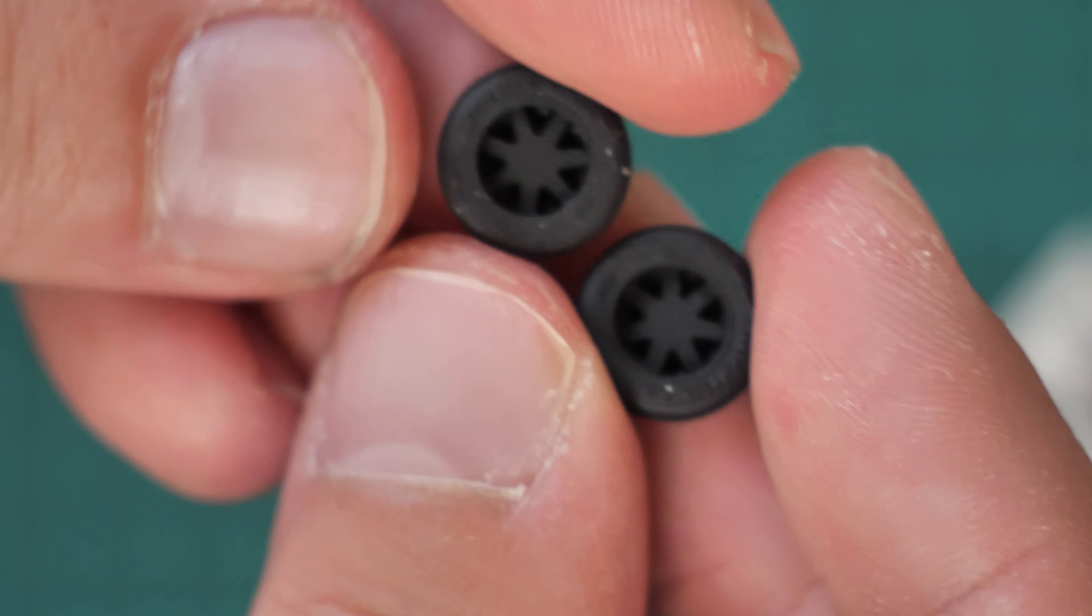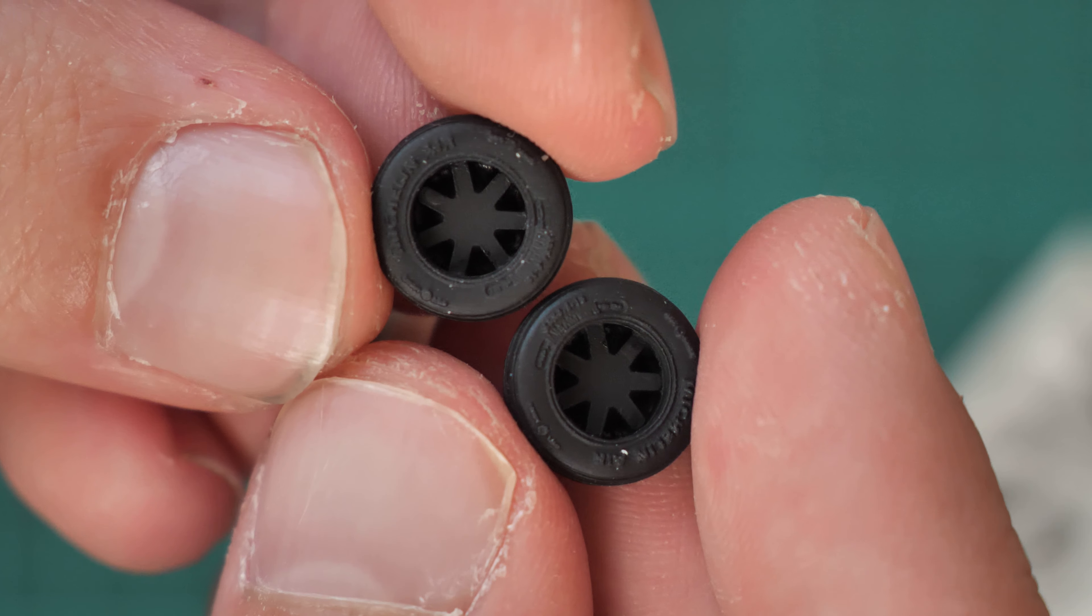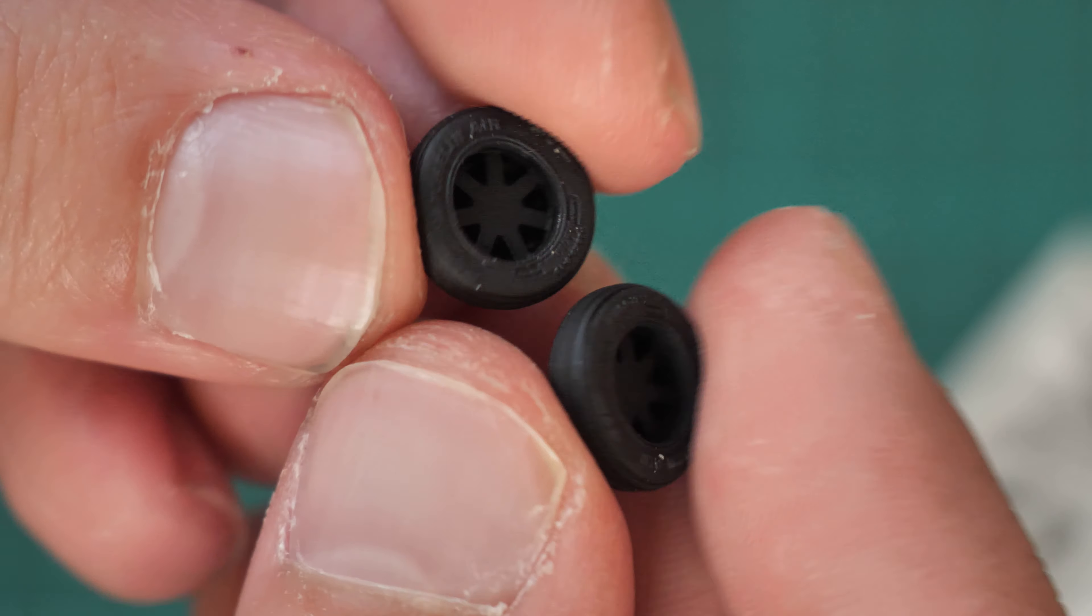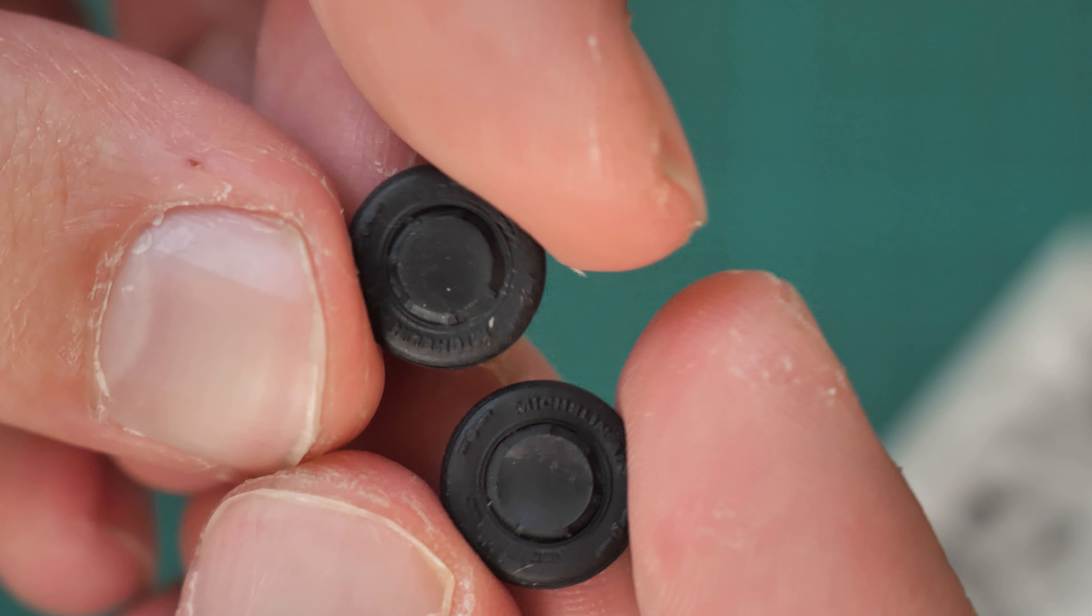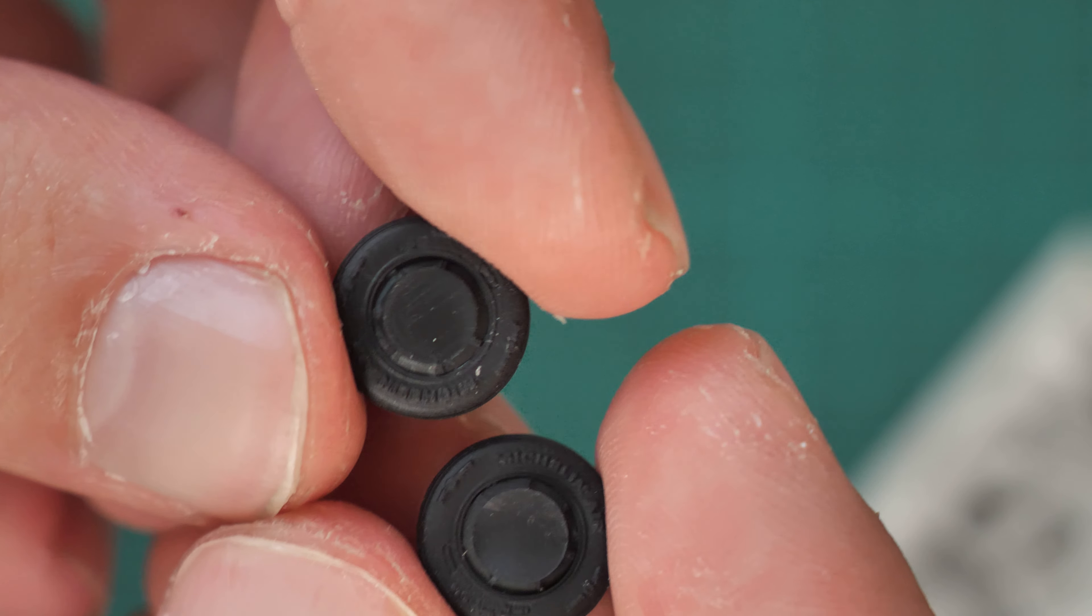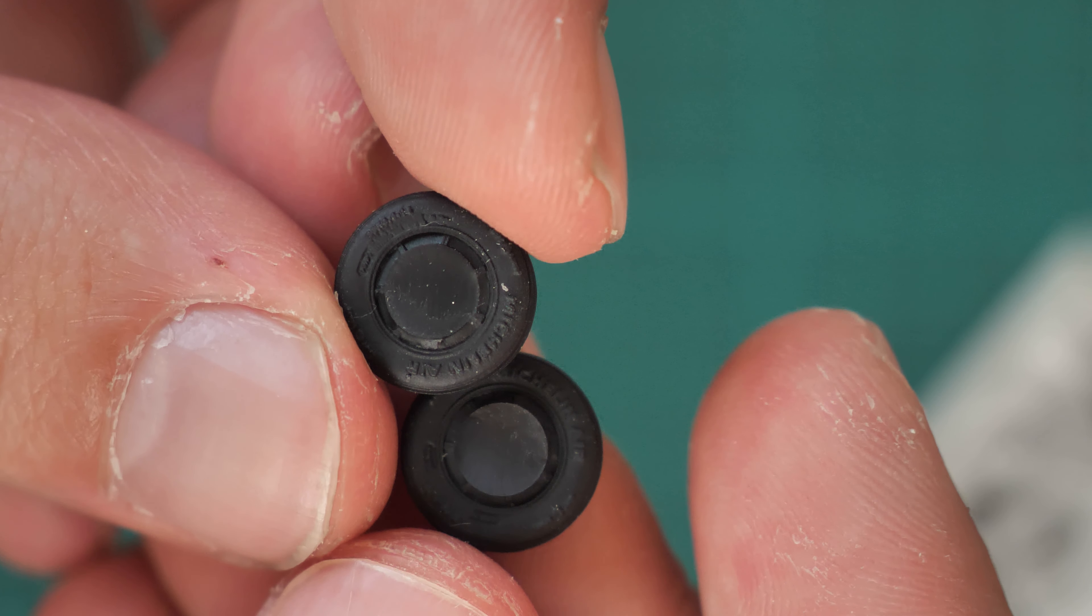And here we have also the nose tire parts, and as you can see they're featuring the same level of detailing as the main wheels. We even have the Michelin logo on these parts.